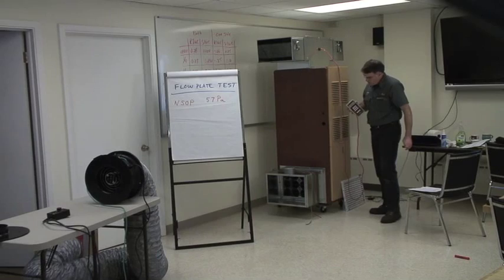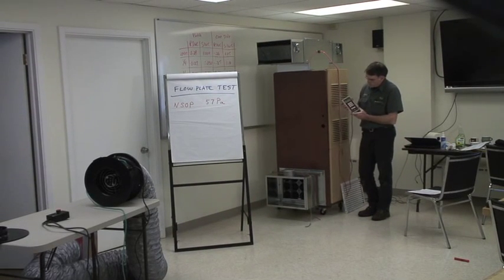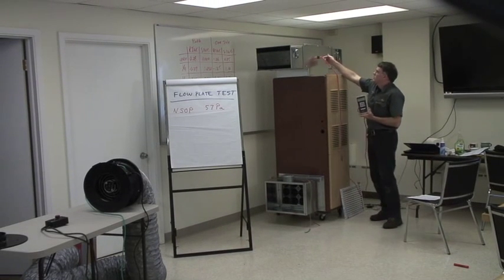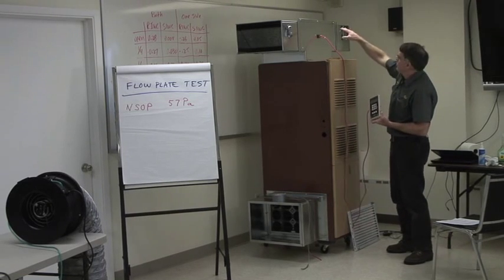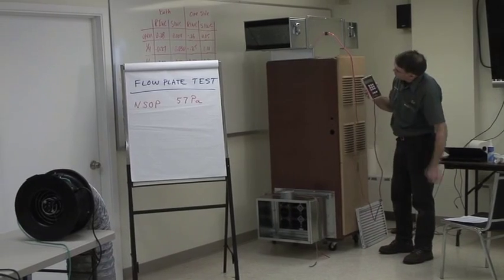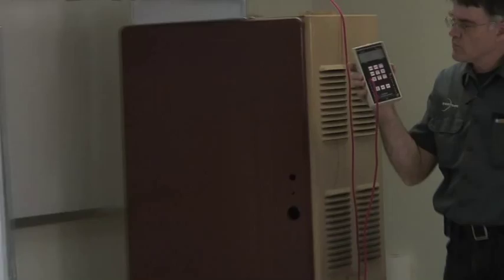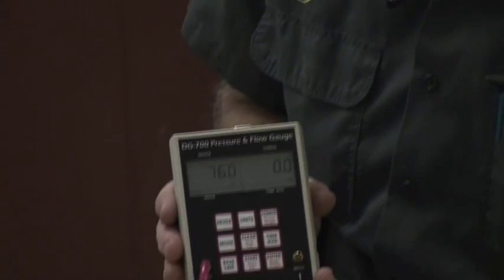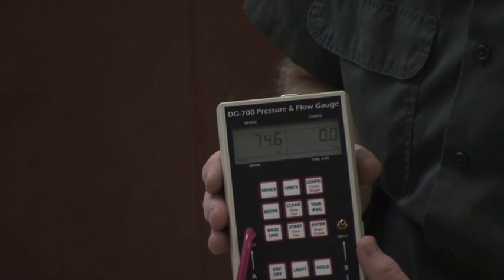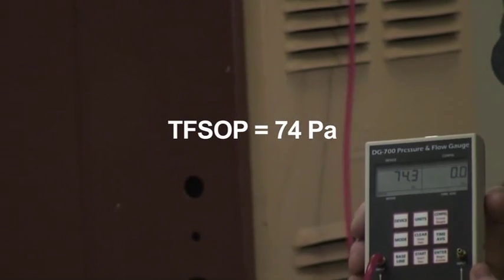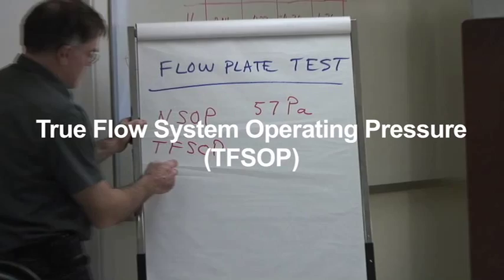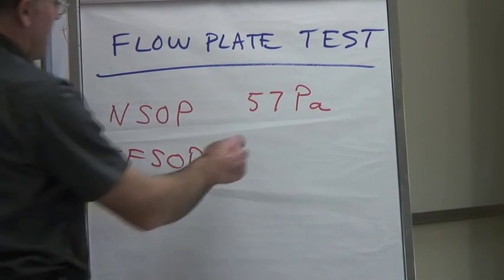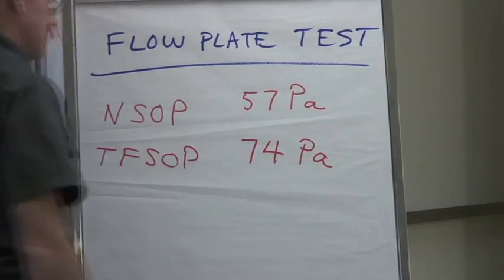Now before I connect up to the plate, I'm going to re-measure my supply static pressure. I didn't have to do anything other than replace the filter with the plate. Didn't have to move this, it has a magnet to keep it on. All I do is look back at the number on the gauge. In this case, it's around 74 or 75 Pascals, moving around a little bit. I'll just choose 74. The abbreviation we use for this is TFSOP for True Flow System Operating Pressure, 74 Pascals.